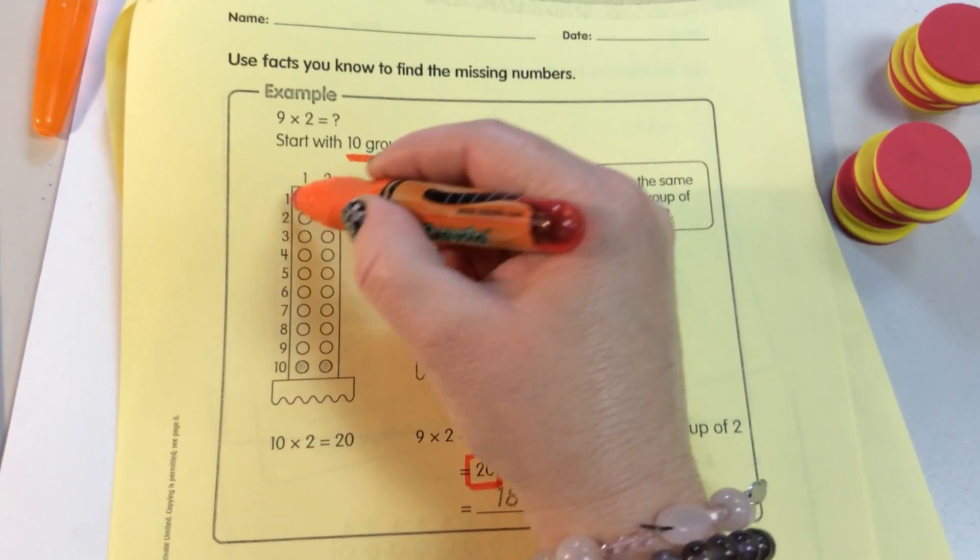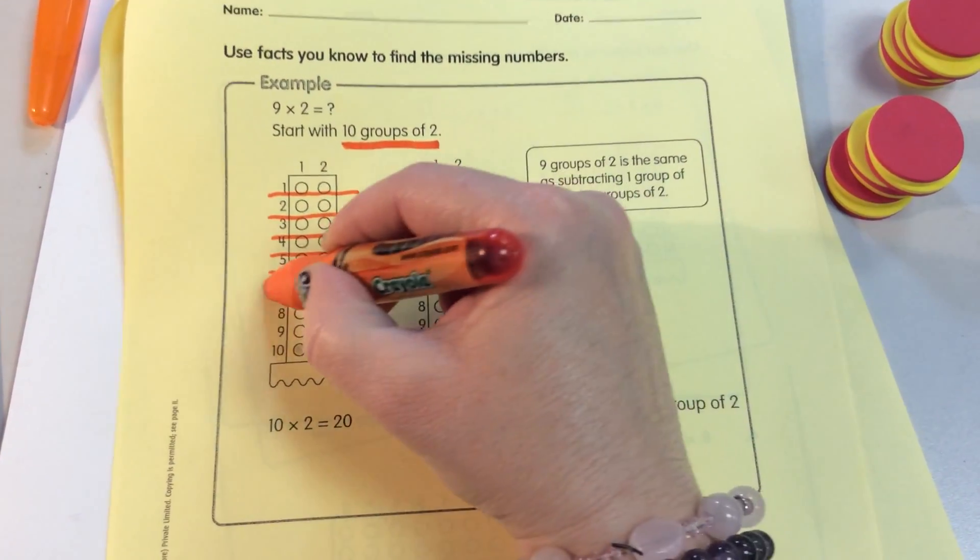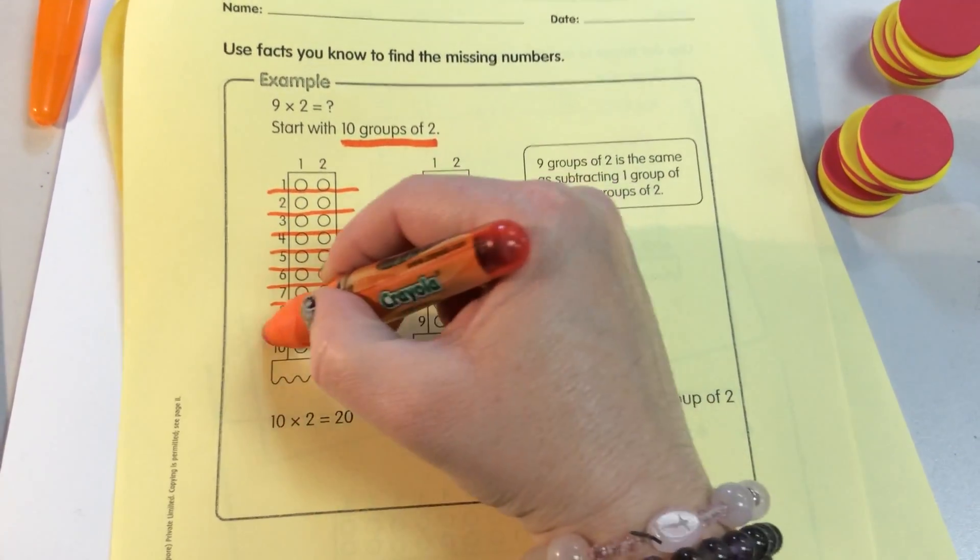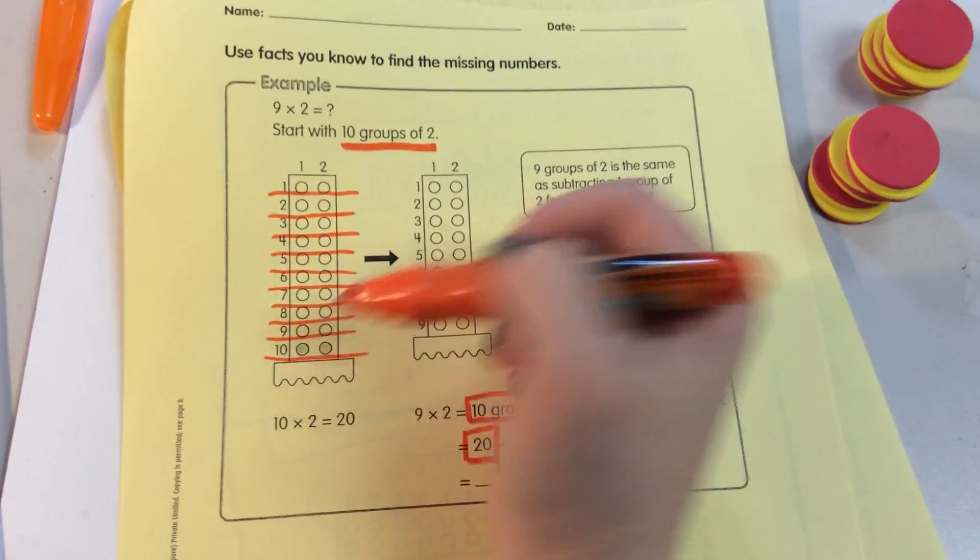Here we have group 1, group 2, group 3, group 4, group 5, 6, 7, 8, 9, 10. We have 10 groups. Each group has 2. They do.